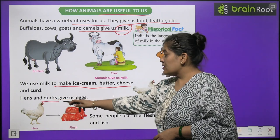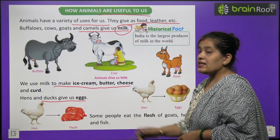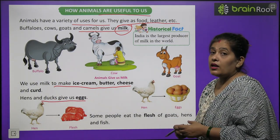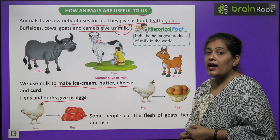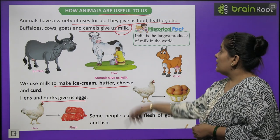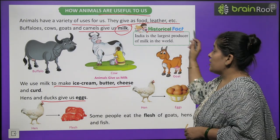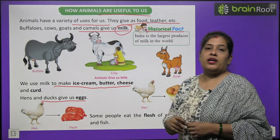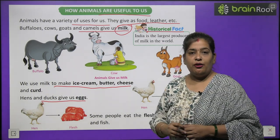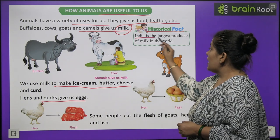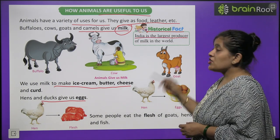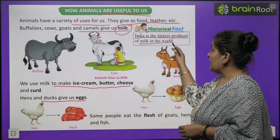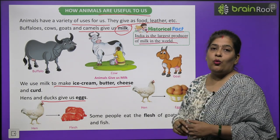Hen and duck give us eggs. Murgi aur buttak kya dete hai? Ande. Historical fact: India is the largest producer of milk in the world.